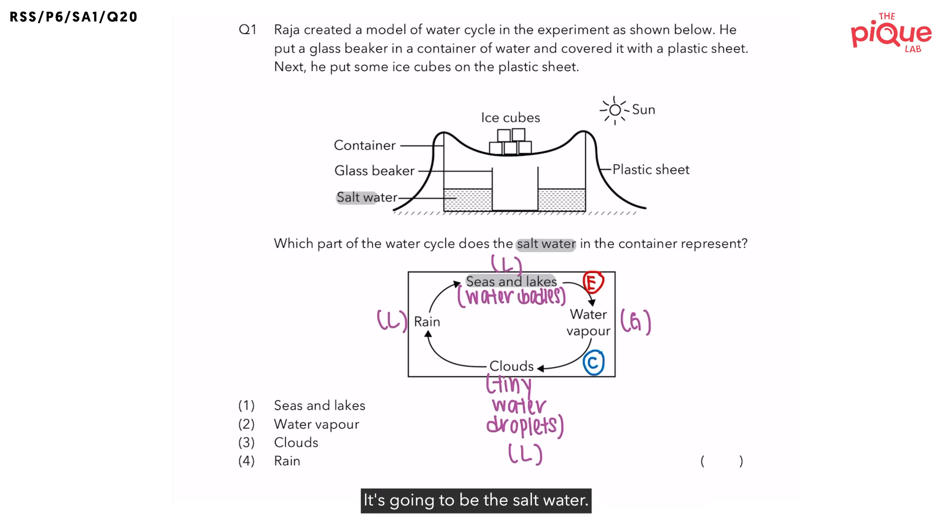It's going to be the salt water. So the water in the salt water is going to evaporate to form water vapor. Now in order for the water in the salt water to become water vapor, it must have gained heat. And where do you think it's going to gain heat from? It's probably gaining heat from the sun. So the sun is the heat source in this model.